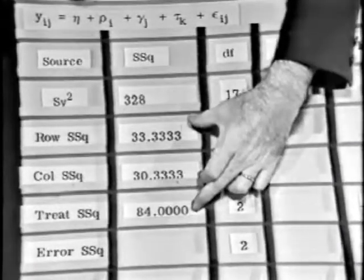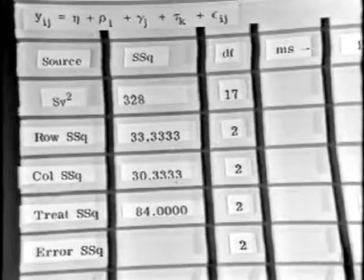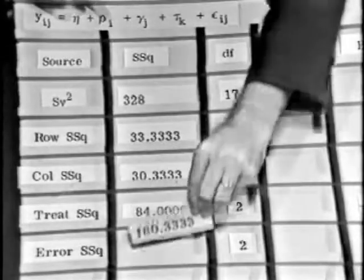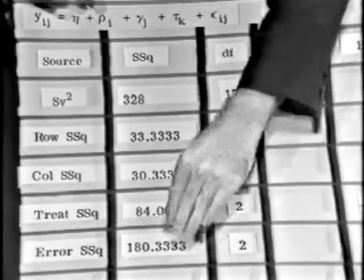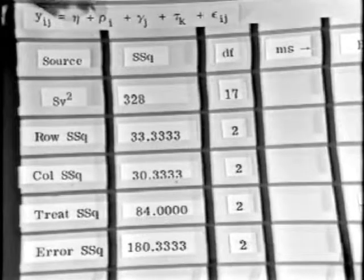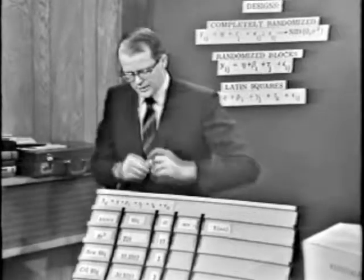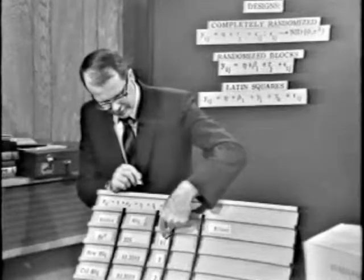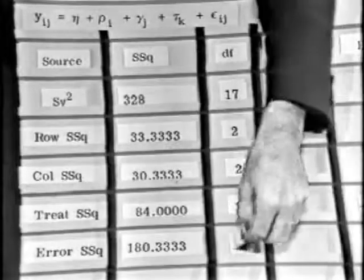And when I subtract these sources of variation away from the total available variability, I end up with an error sum of squares of one hundred and eighty and a third. And how many degrees of freedom does that error sum of squares now have? Well, seventeen minus six would be eleven. So that's an error sum of squares with eleven degrees of freedom.